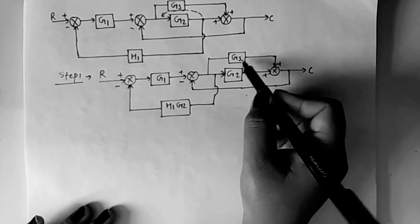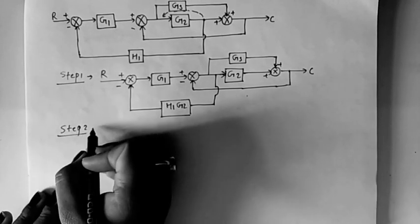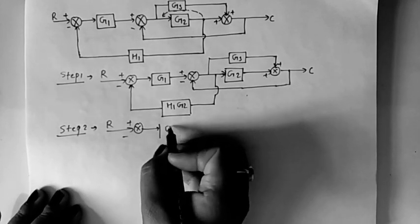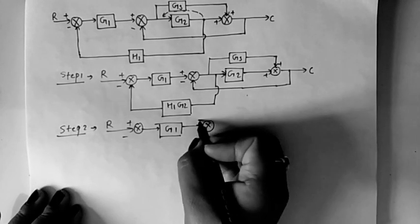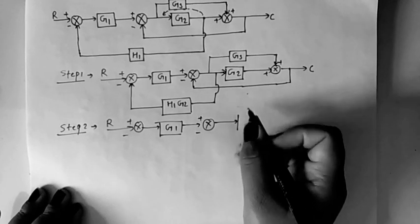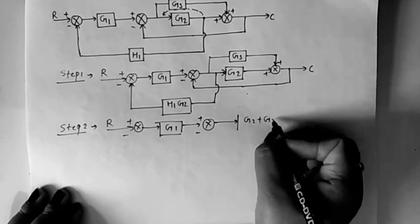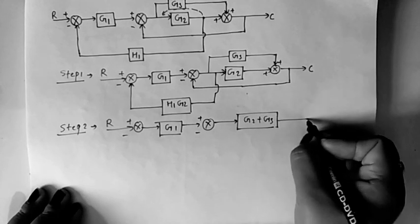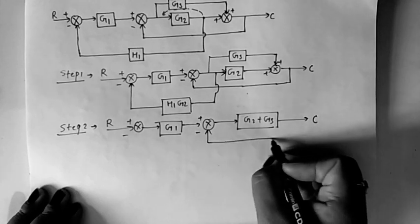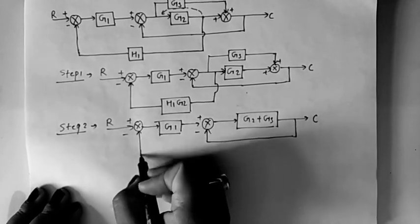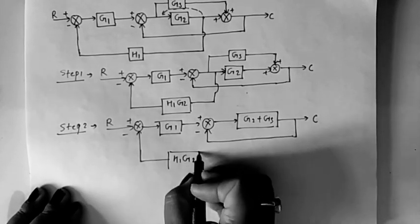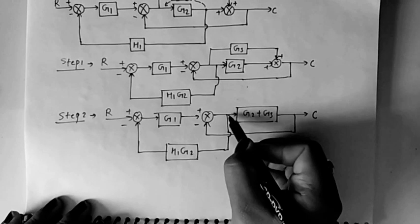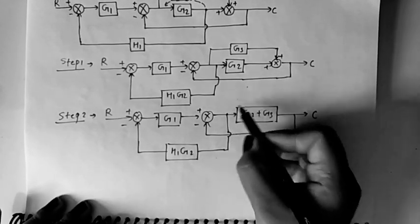Step 2: We can easily solve these two blocks. Both blocks are in parallel connection, so the final transfer function for this combination will be G2 plus G3.